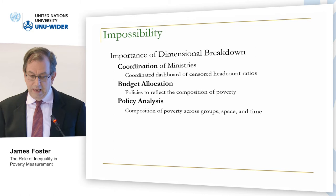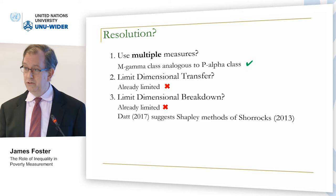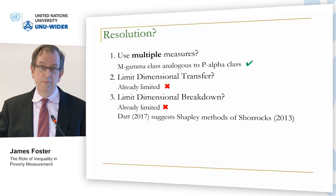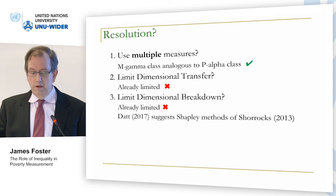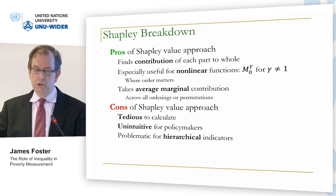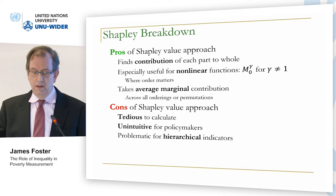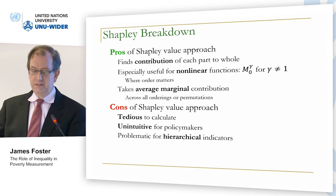We explore a resolution. Maybe use multiple measures — one for each thing. We could use the gamma class. A paper by Dutt suggests using the Shapley methods of Tony Shorrock. The Shapley value approach finds contributions of each part to the whole; it's useful especially for nonlinear functions like M-gamma. It takes the average marginal contribution across all permutations of entering dimensions. The cons: it's extremely tedious to calculate, unintuitive for policymakers, and as Shorrock pointed out in his original paper, is problematic for hierarchical variables.